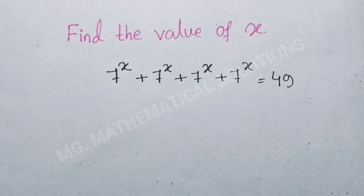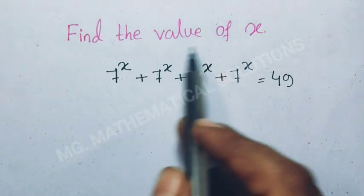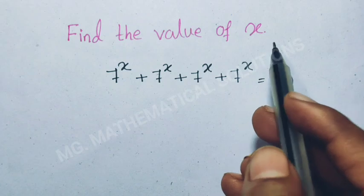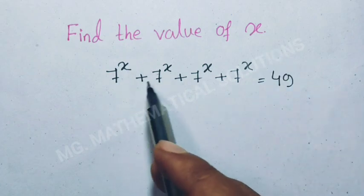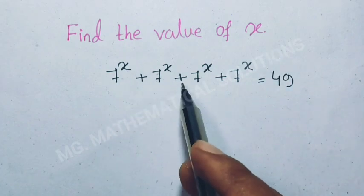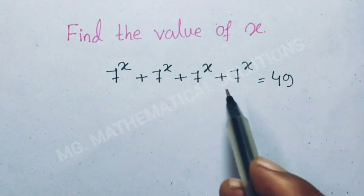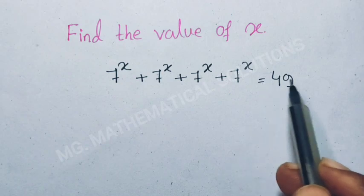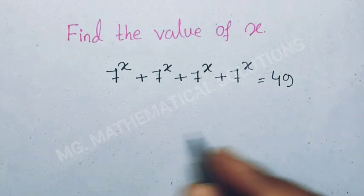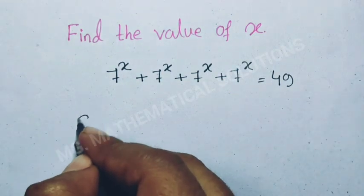Hello students, today I solve a nice algebra problem which is: find the value of x in the equation 7 to the power x plus 7 to the power x plus 7 to the power x plus 7 to the power x equal to 49. Let's see the solution.